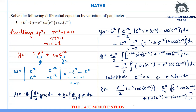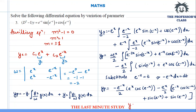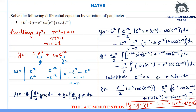Simplifying further, the final answer is y = yc + yp, which is c1·e^(-x) + c2·e^x - e^x·sin(e^(-x)). That's it for this video. Thank you so much.